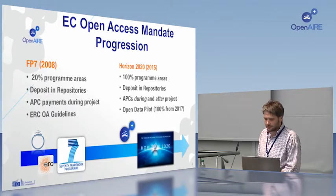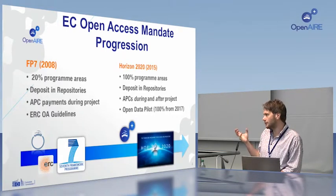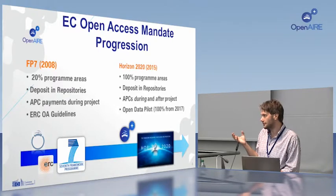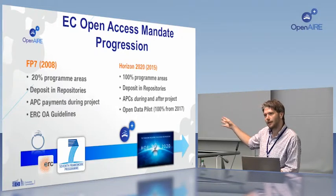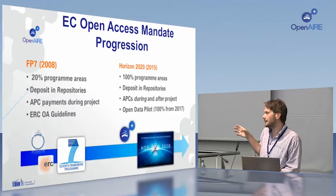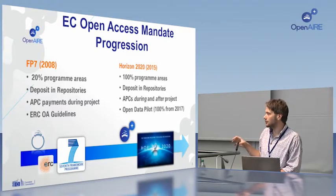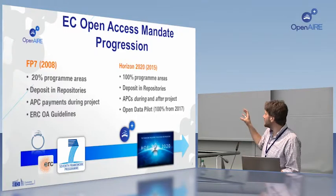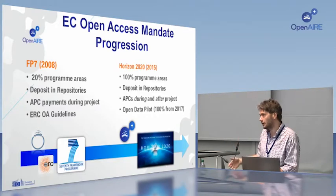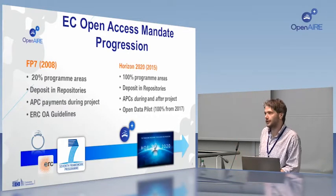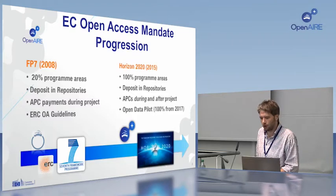We can see here the evolution. The key concern at first was open access to publications — this was really the key for the European Commission and for OpenAIRE. OpenAIRE stands for Open Access Infrastructure for Research in Europe. We were very much focused on open access. But as the European Commission has evolved, and we like to think they have evolved with us as well, now OpenAIRE is very much an open science infrastructure for Europe.